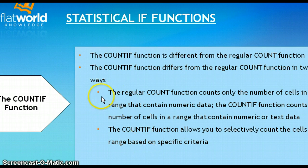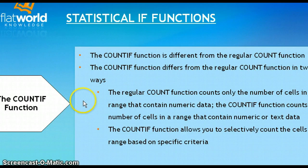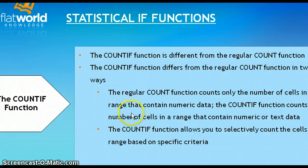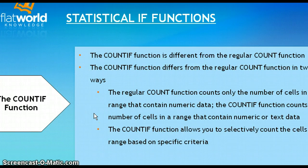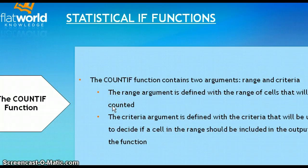The COUNT function and COUNTIF function both count cells within a range, but the COUNTIF function is different. The COUNTIF function counts the number of cells in a range that contain numeric or text data meeting a specific argument — it's conditional, based on a true or false argument. You're going to count a cell only if it meets that specific criteria. That's the only real difference between the COUNT function and the COUNTIF function. In Excel, you have to give the function various arguments or criteria which the system tests to give you a true or false indication.